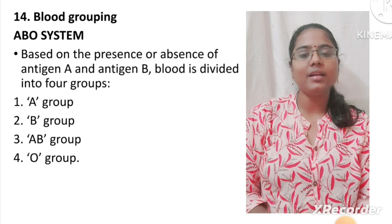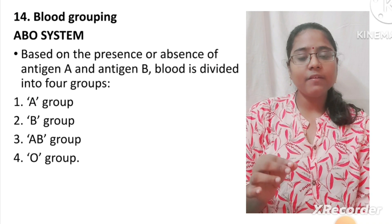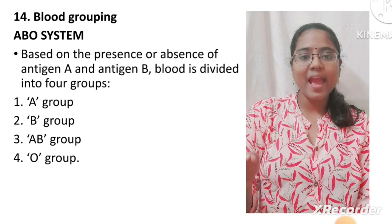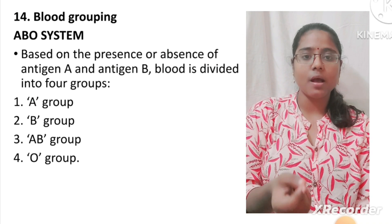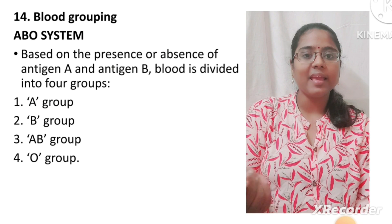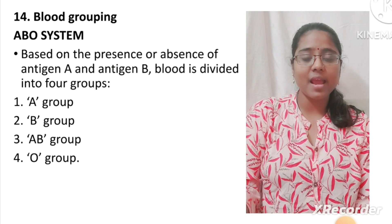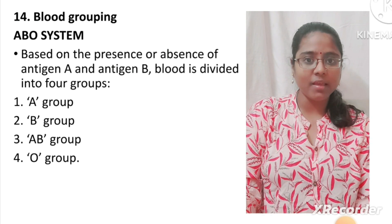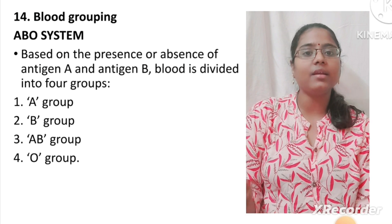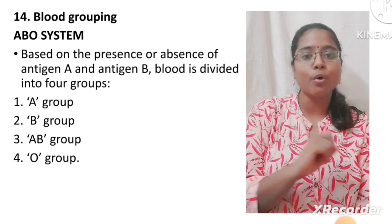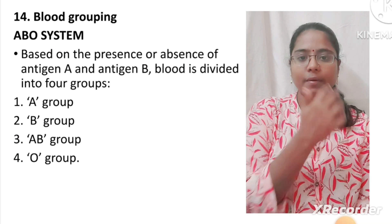These are the two types of blood grouping. If there is A antigen present but RH antigen is absent, then the blood is A negative. If there is A antigen and B antigen present, then the blood is AB positive. So this is how we do blood grouping.